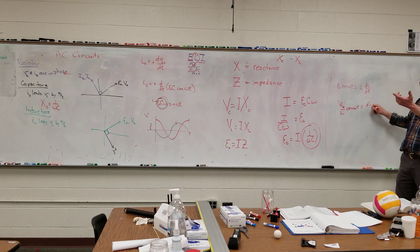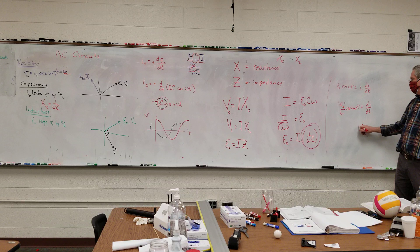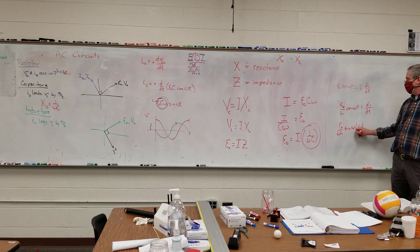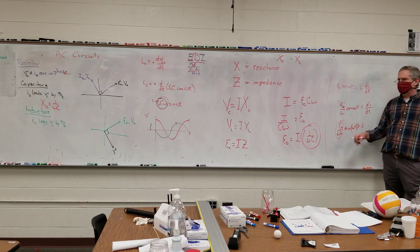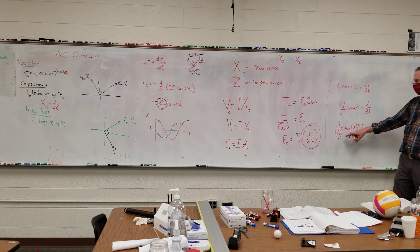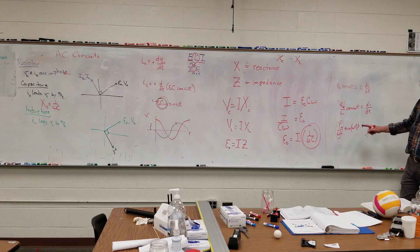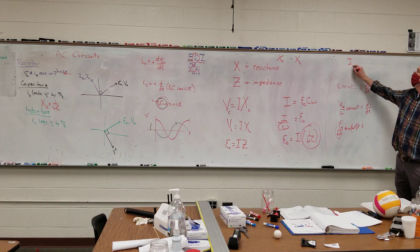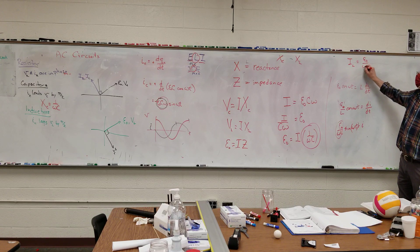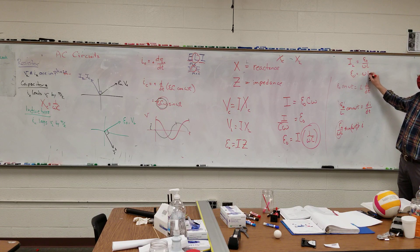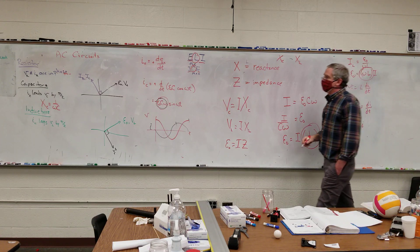I think I left something off last time. So I is equal to epsilon-naught over omega-L, times sine of omega-t. So my current through the inductor is equal to epsilon-naught over omega-L. Putting it into my form, epsilon-naught is equal to omega-L times I. In other words, this omega-L here is my inductive reactance.